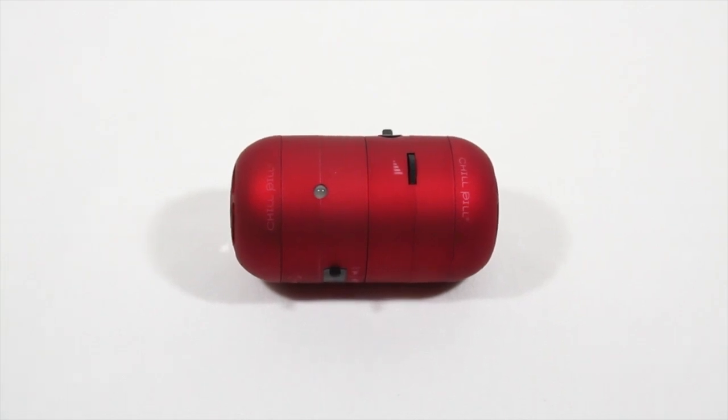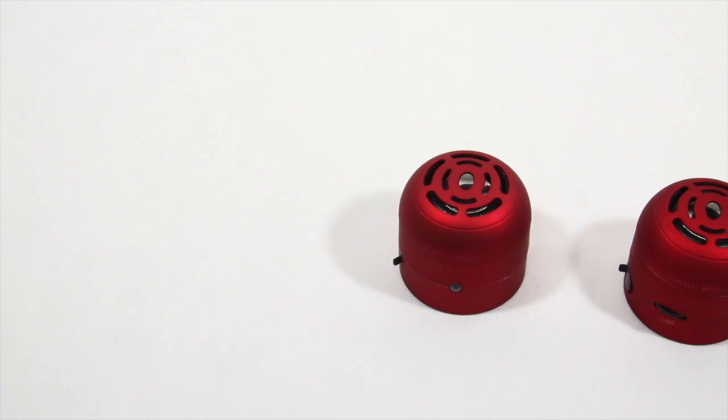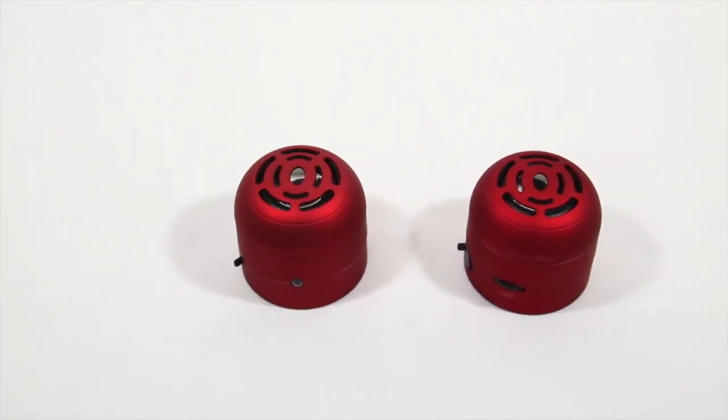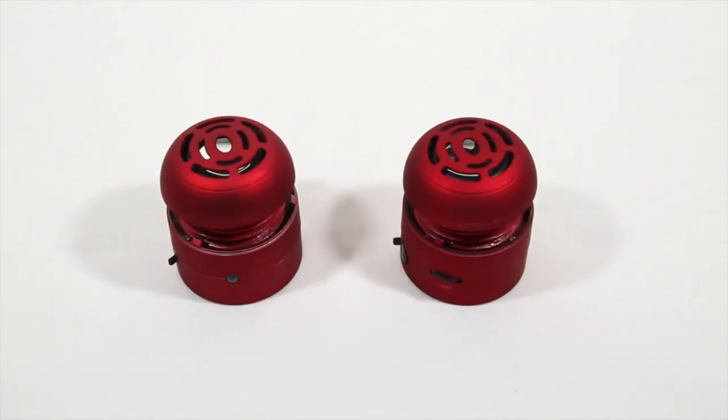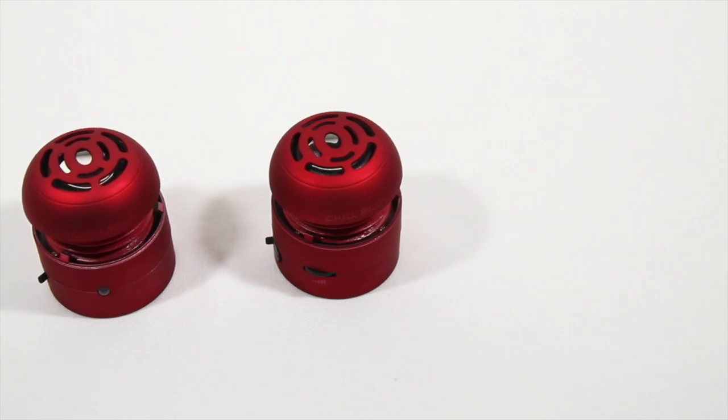The Chill Pill speakers are a compact way to carry around some pretty powerful audio. Held together by magnets, the two speakers can be easily stored or separated to give you portable stereo sound. The Chill Pill speakers are also collapsible. Gently turning the top portion of each speaker will open them up for better bass track response, resonance, and replication.